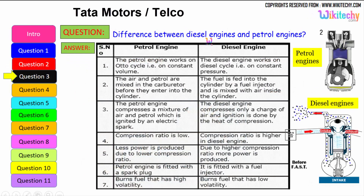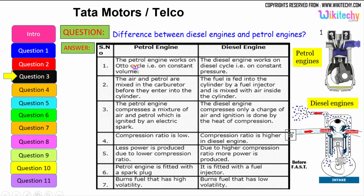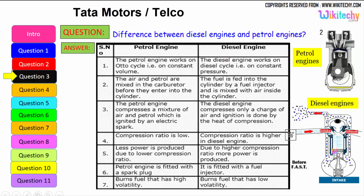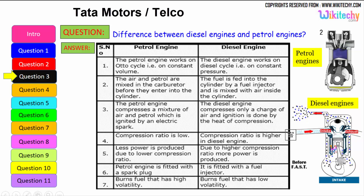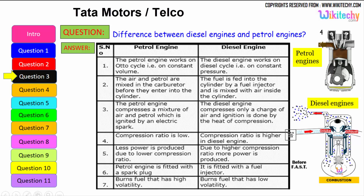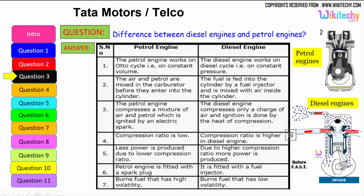Let us see the difference between the diesel engine and the petrol engine. The petrol engine works on the Otto cycle, therefore on constant volume, whereas the diesel engine works on the diesel cycle, on constant pressure. In a petrol engine, air and petrol are mixed in the carburetor before entering the cylinder; in a diesel engine, fuel is fed into the cylinder by a fuel injector and mixed with air inside the cylinder.